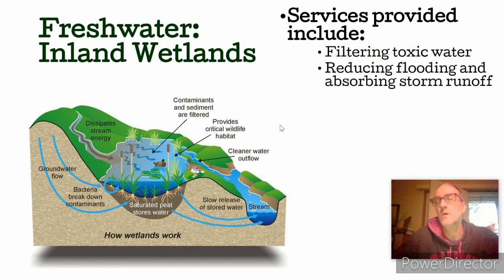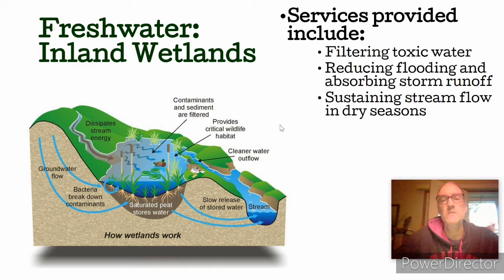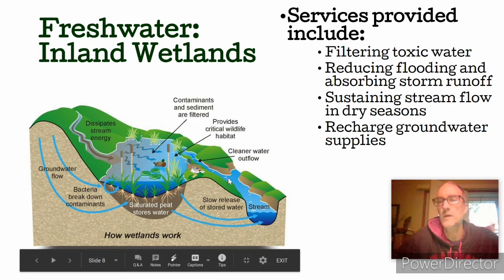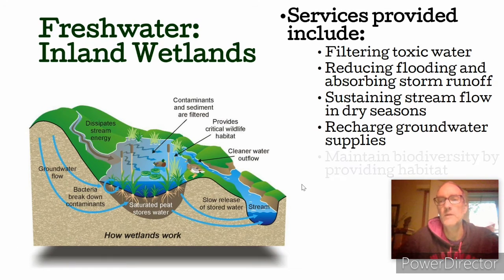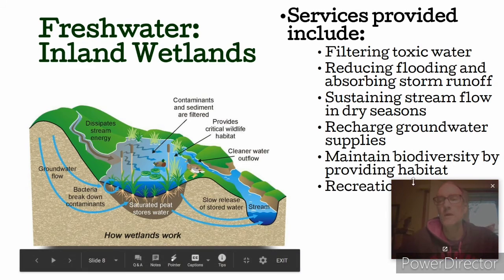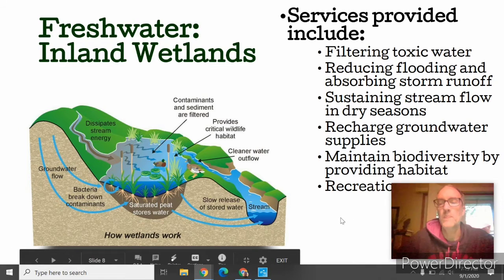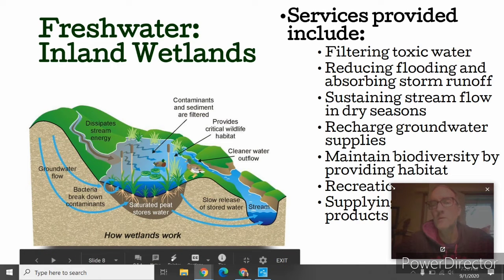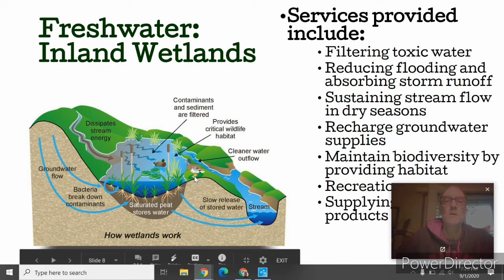Wetland services include filtering toxic water, reducing flooding, sustaining stream flow by slowly releasing water into streams, and recharging groundwater supplies. Those aquifers are located far down — sometimes miles deep, as in the case of our aquifer here in Madison. Wetlands also provide habitat for many organisms, have recreational values, and supply products such as wild rice and cranberries, which we harvest here in Wisconsin.